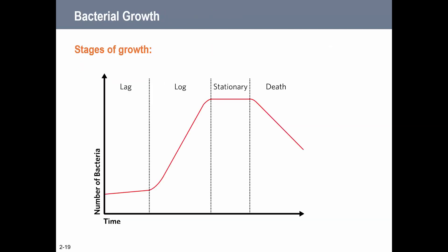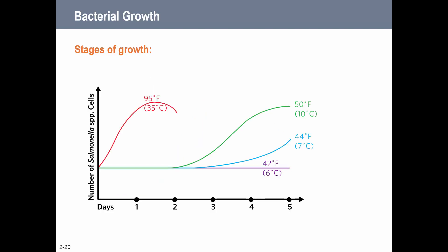Looking at stages of bacterial growth: the number of bacteria versus time shows that once you hit the log phase, bacterial growth grows exponentially. The longer we leave food out in the danger zone, the more bacteria we'll have in that phase. At 95°F, bacteria is growing way more rapidly, and we don't see big spikes in bacteria growth at 50°F or below until day two or later.